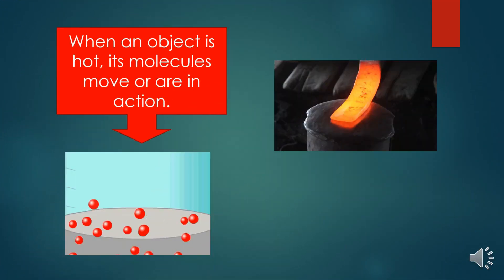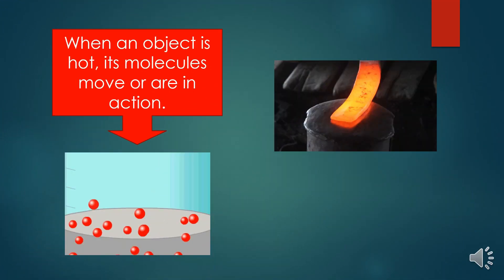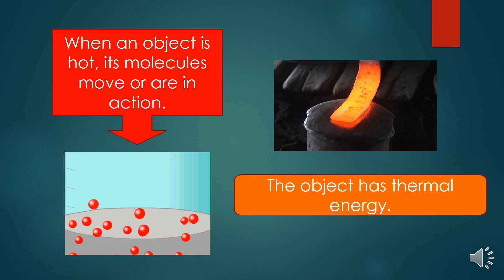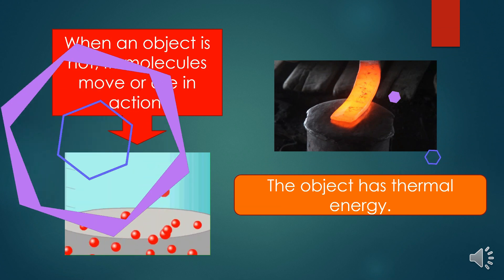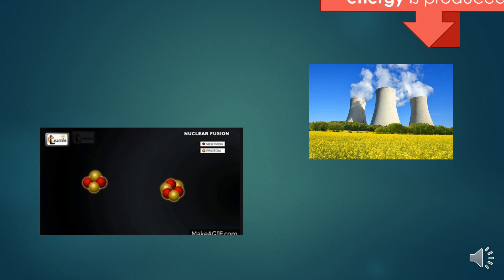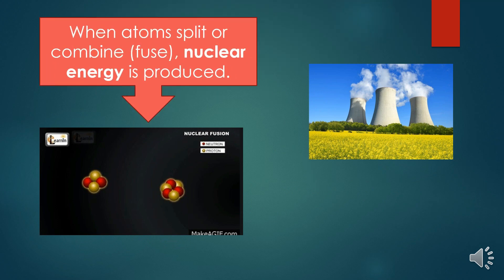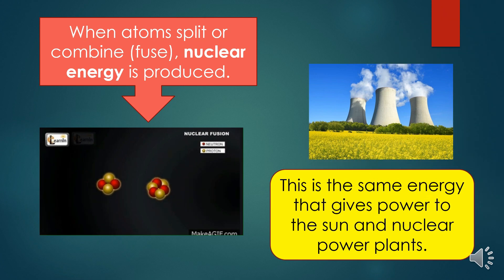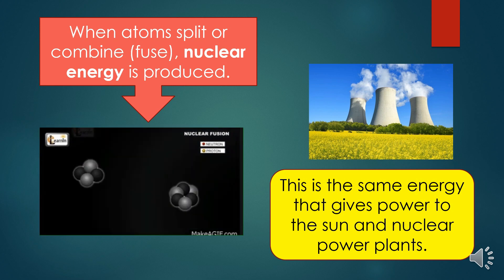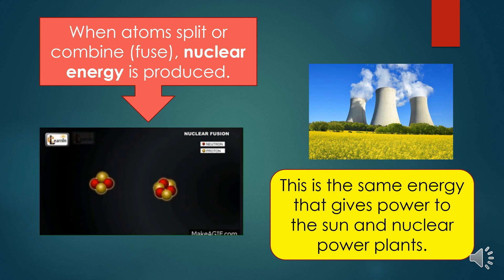When an object is hot, its molecules move or are in action. The object has thermal energy. When atoms split or combine, or fuse, nuclear energy is produced. This is the same energy that gives power to the sun and nuclear power plants.